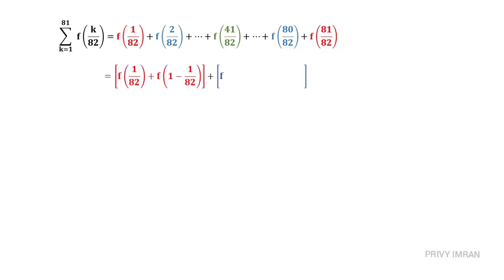Now if you observe here, my first term and last term are in the form of f(x) + f(1-x). Like this I will get 40 cases plus the middle term f(41/82).